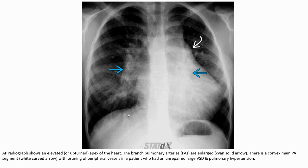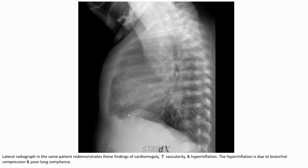This AP radiograph can also demonstrate an elevated cardiac apex. The branch pulmonary arteries are enlarged, with a prominent pulmonary artery segment and pruning of peripheral vessels, in a patient who underwent repair of a large VSD with pulmonary hypertension. The lateral radiograph of the same patient is shown.